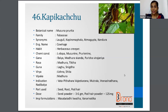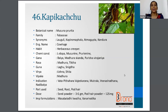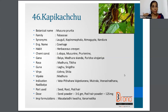The next one is Kapikachu. The botanical name is Mucuna pruriens, family is Fabaceae. Synonyms are Atmagupta, Kandura, etc. The English name is Cowhage. The parts used are seed, root, and pod hair. The dosage: if seed powder is used, it is 3 to 6 gram; and if pod hair powder is used, it is just 125 mg.